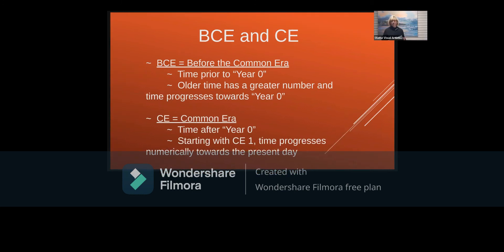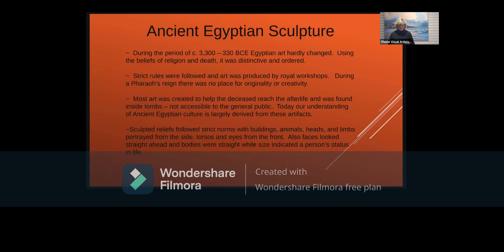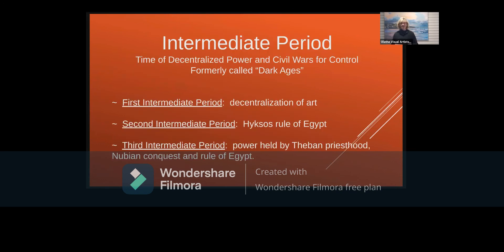BCE means 'Before the Common Era' — that's the year zero — and older time is a greater number; it's the same concept as BC, just a different name. The intermediate periods are also sometimes called the dark ages: decentralized power and civil wars. During the First Intermediate Period, the pharaohs no longer had their workshops, and people could have a little creativity. The Second Intermediate Period was when the Hyksos ruled Egypt, and the Third was when the Theban priesthood and Nubian conquest took place.